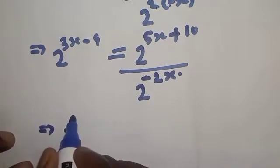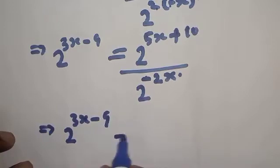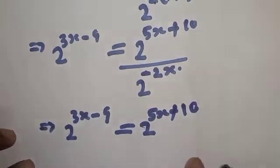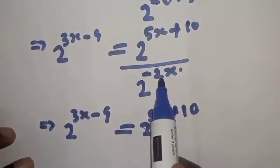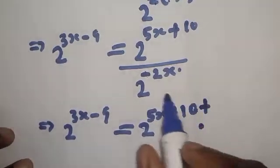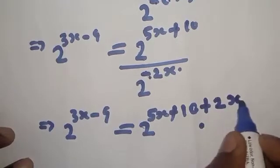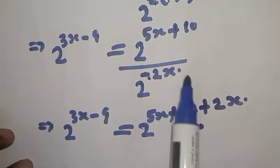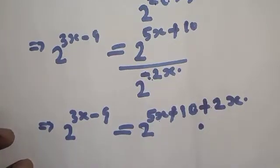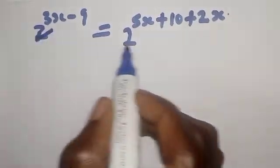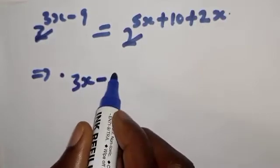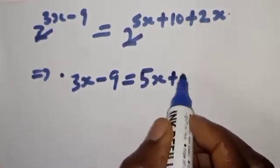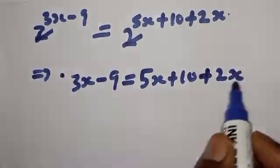This implies we have 2 raised to power 3x minus 9, is equal to 2 raised to power 5x plus 10. Now by the laws of indices, we have 2 raised to power minus 2x on the denominator, so it becomes plus 2x when brought up. Since we have the same base, the bases cancel, and we have 3x minus 9 equal to 5x plus 10 plus 2x.